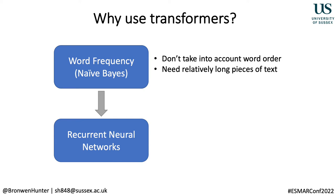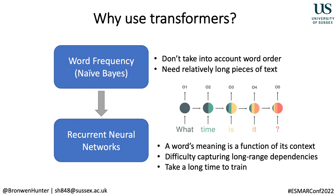In contrast, more recent text classifiers use what we call recurrent neural networks. These models are based on the logic that a word's meaning is a function of its context. Words are fed in sequentially and the hidden state — represented by circles in the diagram — is a function of the hidden state of the previous word, such that the hidden state of the final word contains information from all words in the sequence. However, the representation of the final word contains quite little information from the first word. In essence, these models struggle to represent relationships between words that are far apart in a sequence, and because words need to be fed in one by one, they can be quite slow to train.